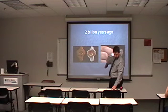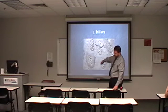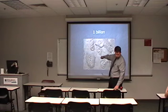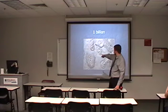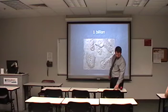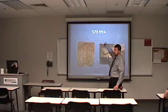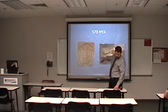Two billion years ago, you have eukaryotes. One billion years ago, you have the first multi-celled organisms. This is a very rare find — one of the only fossils they've found so far. Then you have arthropods. MYA is millions of years ago.